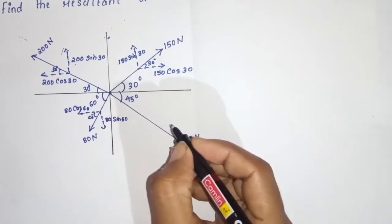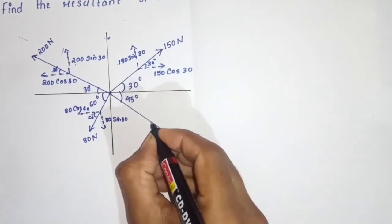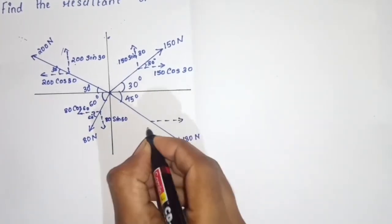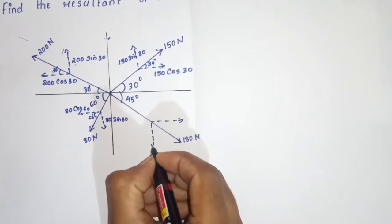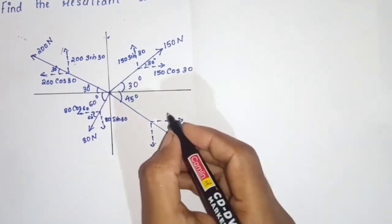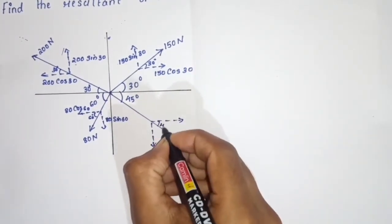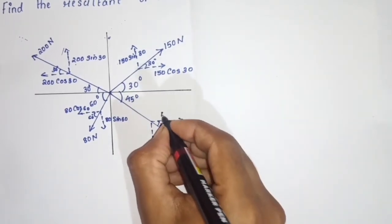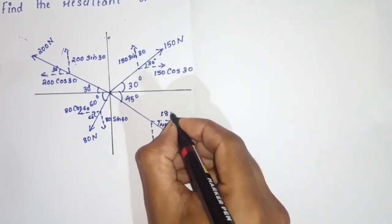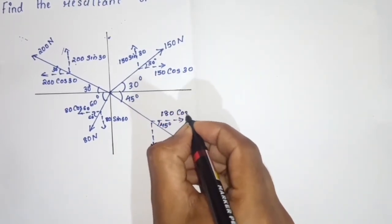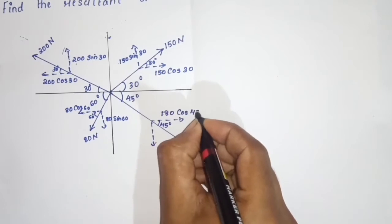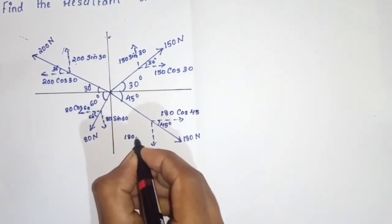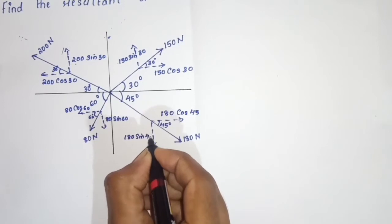Now 180N. The horizontal component is 180 cos 45, and the vertical component is 180 sin 45.